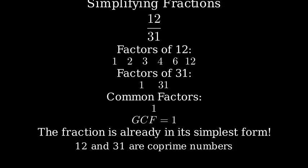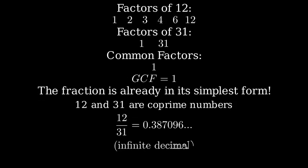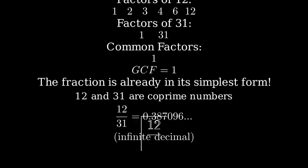Let's verify this with a division. If we divide 12 by 31, we get approximately 0.387. This is an infinite decimal that cannot be simplified further, confirming that our fraction 12 over 31 is indeed in its simplest form.